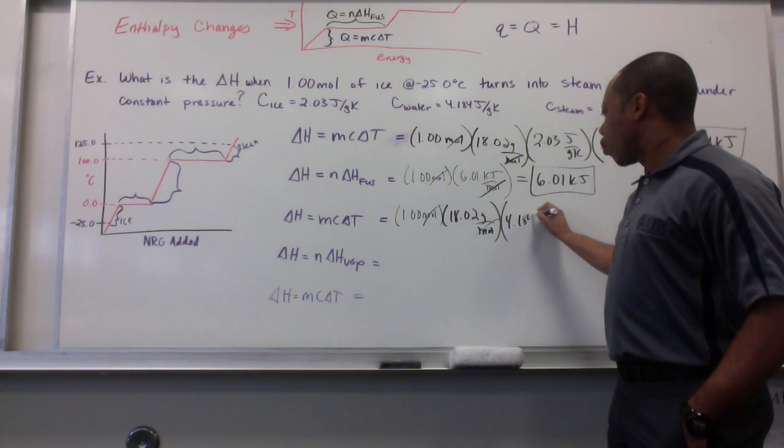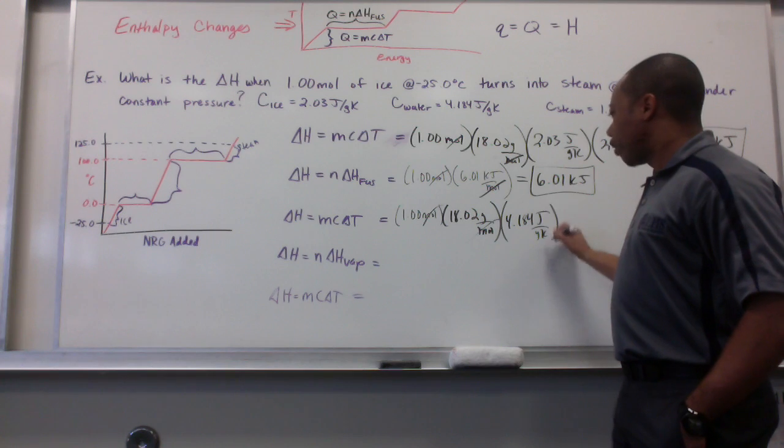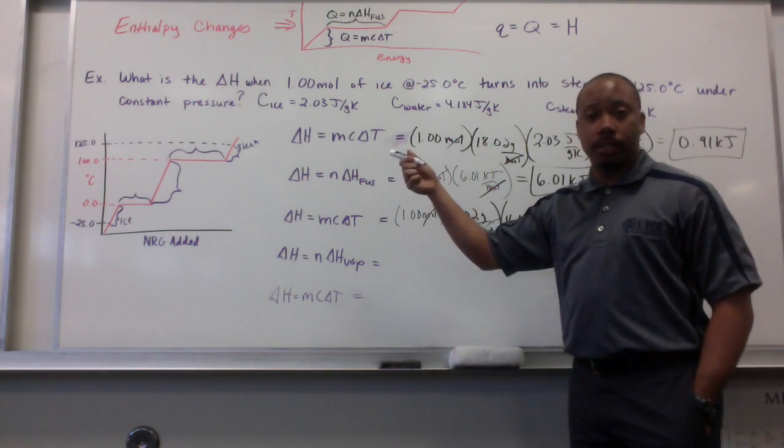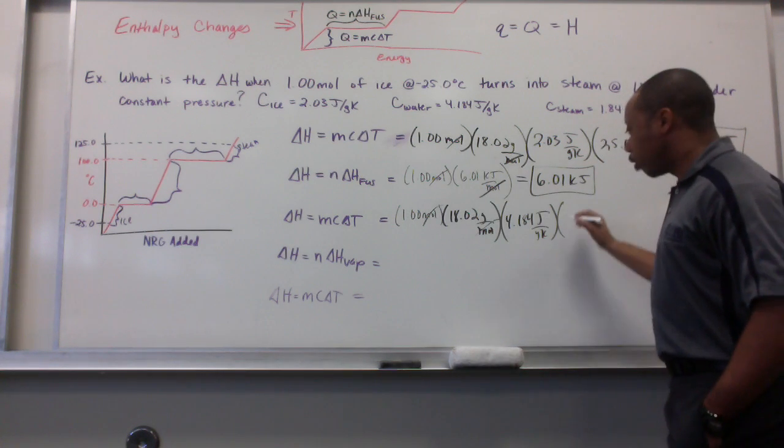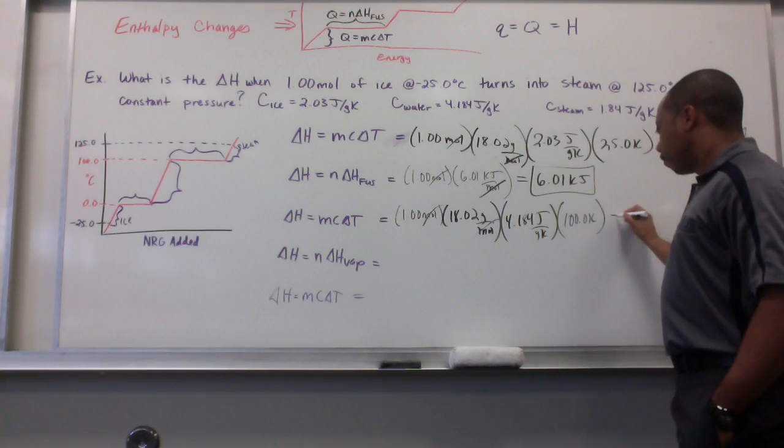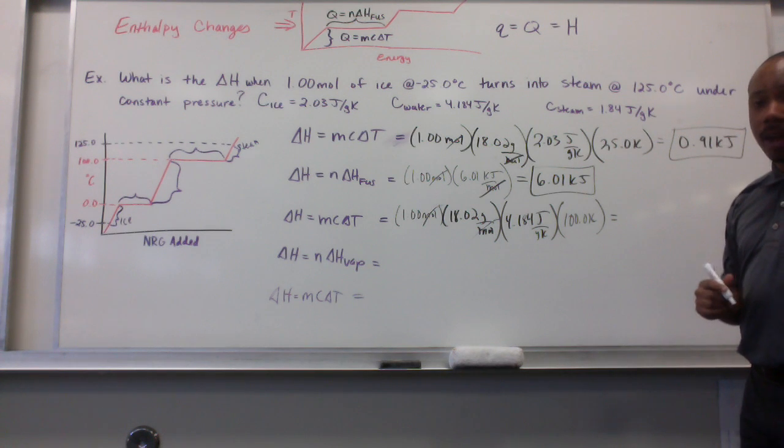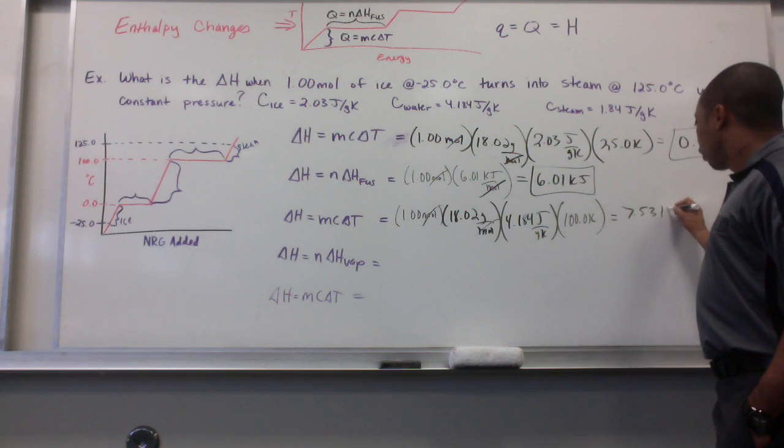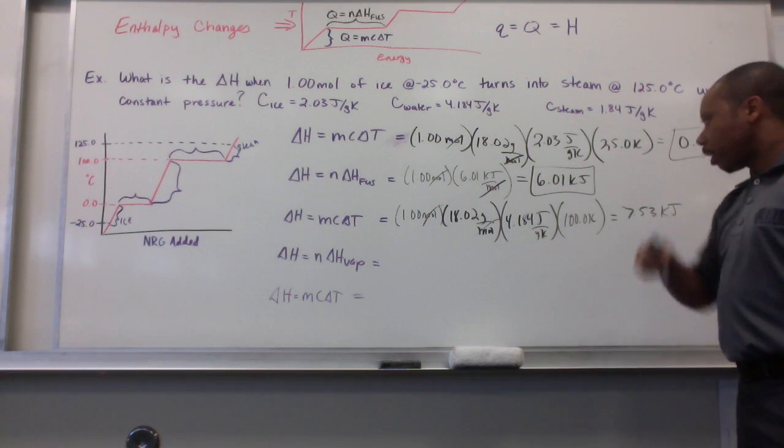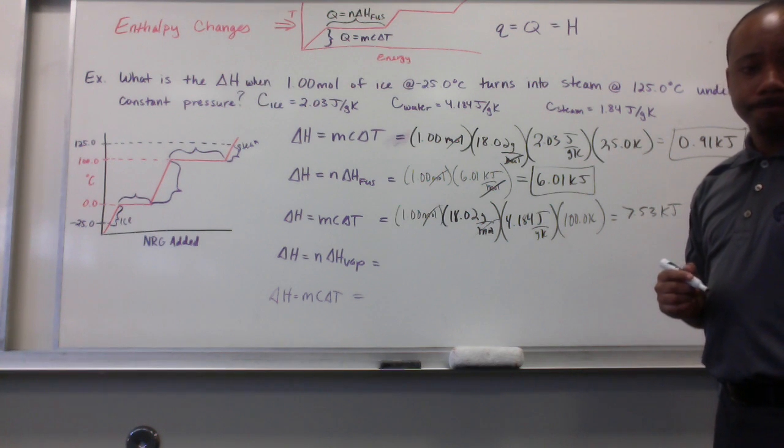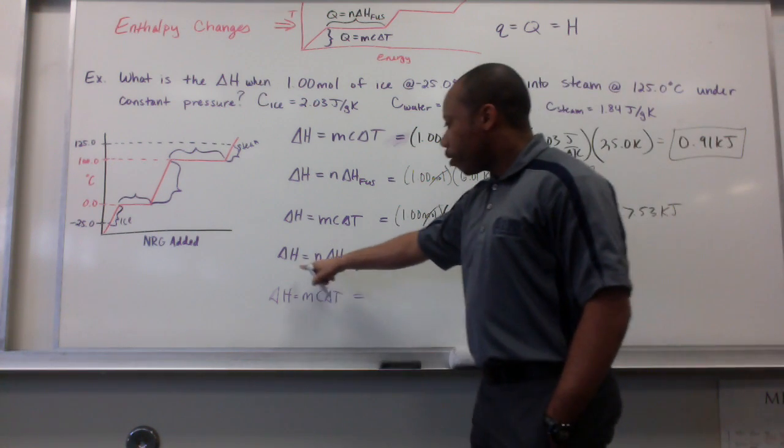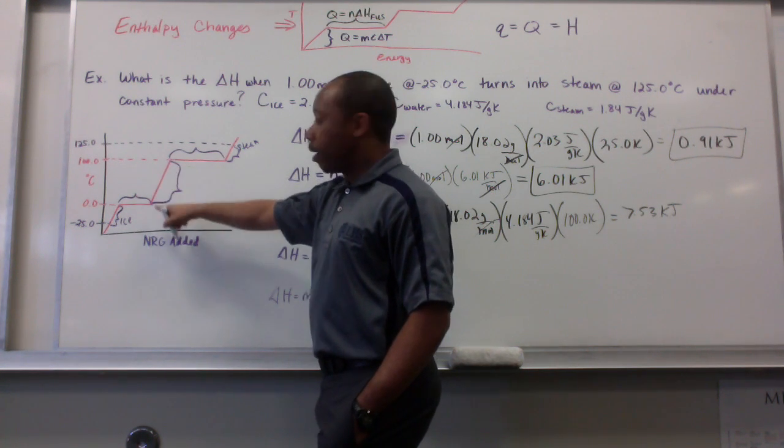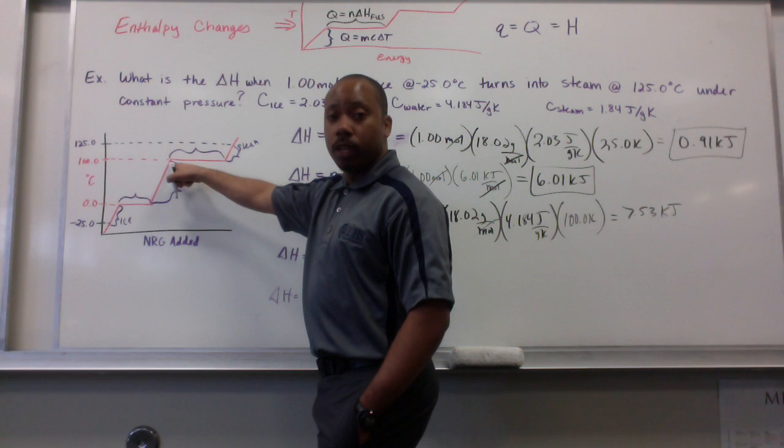So, it's 4.184 joules per gram Kelvin. My temperature change is from 0 to 100 degrees. So, T final minus T initial is just 100. And, I simplify. Once I simplify, it's 7.53 kilojoules. Now, I've just gone through this process. It takes 7.53 kilojoules to go from 0 degrees Celsius to 100 degrees Celsius in the water phase.